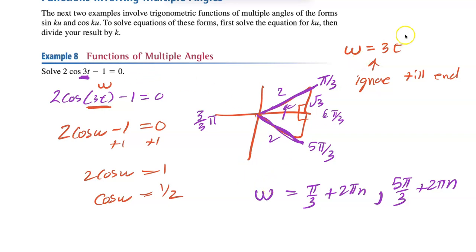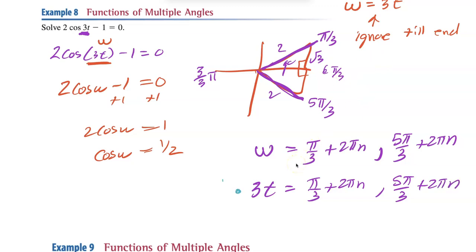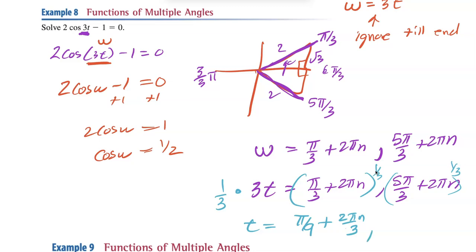Now bring back w = 3t. So 3t = π/3 + 2πn and 3t = 5π/3 + 2πn. To solve for t, multiply everything by 1/3: t = π/9 + 2πn/3 and t = 5π/9 + 2πn/3. That's the general solution — substitute, ignore until the end, bring it back, then multiply by the reciprocal.